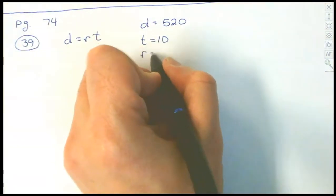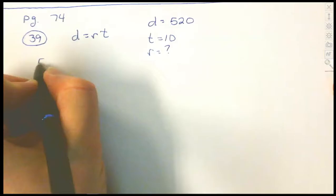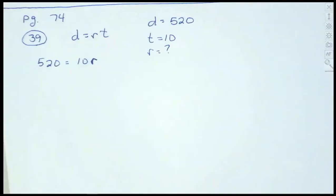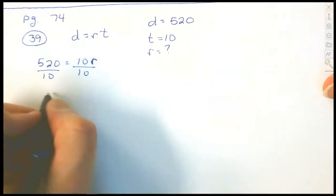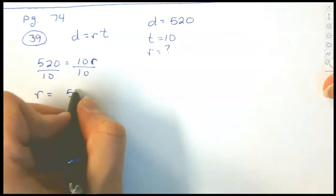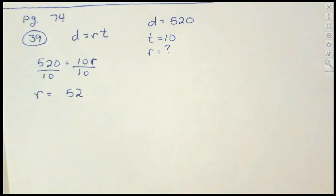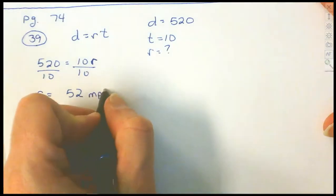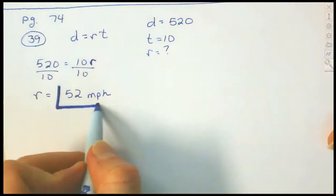We just plug our numbers in: 520 equals 10 times R. These are very simple. Divide by 10, and that gives us R = 52. It tells us it's going to be in miles per hour. This is a rate, so rates are the distance over the time. Our distance is measured in miles, our time in hours, so our rate is miles per hour — 52 MPH.